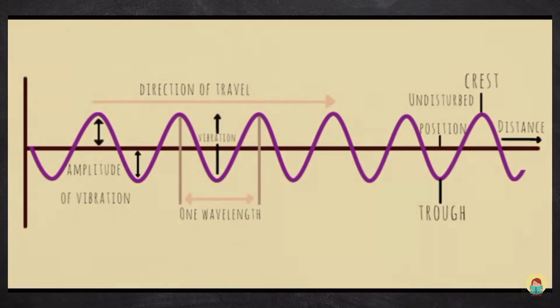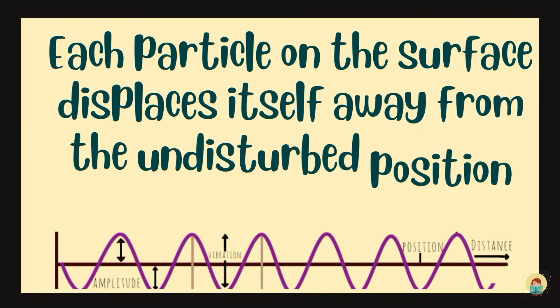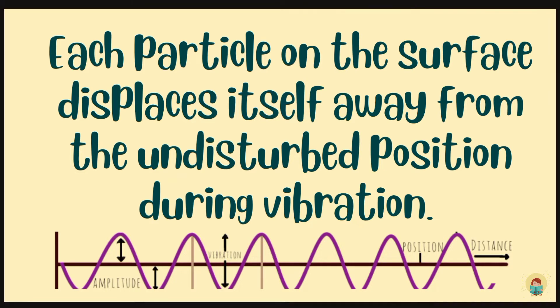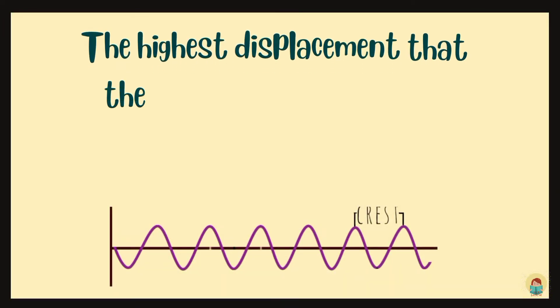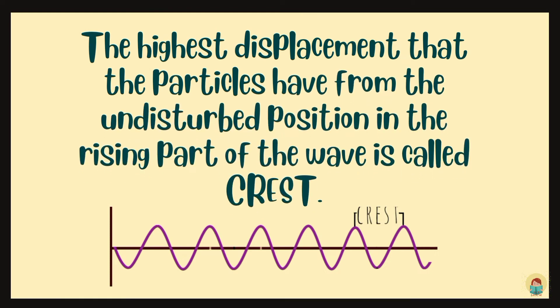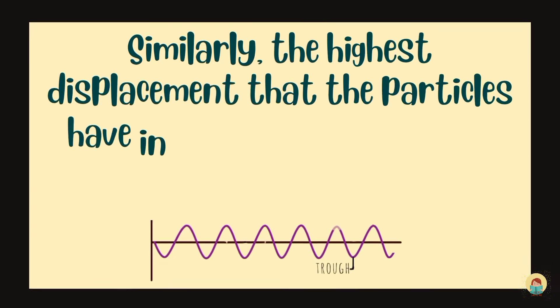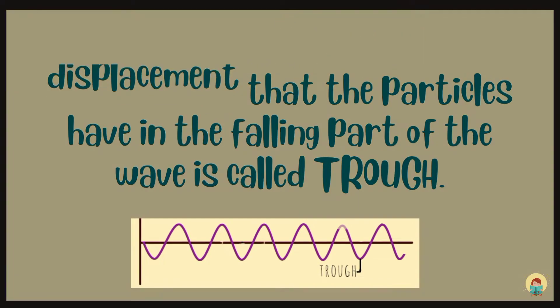In a transverse wave, each particle on the surface displaces itself away from the undisturbed position during vibration. The highest displacement that the particles have from the undisturbed position in the rising part of the wave is called crest. Similarly, the highest displacement that the particles have in the falling part of the wave is called trough.